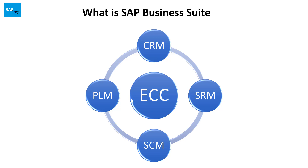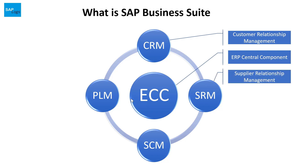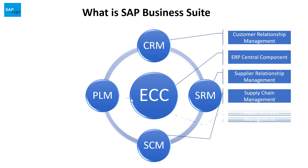SAP Business Suite consists of five software applications, as you can see on the slide, which are SAP ECC, CRM, SRM, SEM, and PLM. CRM stands for Customer Relationship Management. ECC stands for ERP Central Component. SRM stands for Supplier Relationship Management. SEM stands for Supply Chain Management. And finally, PLM stands for Product Lifecycle Management.